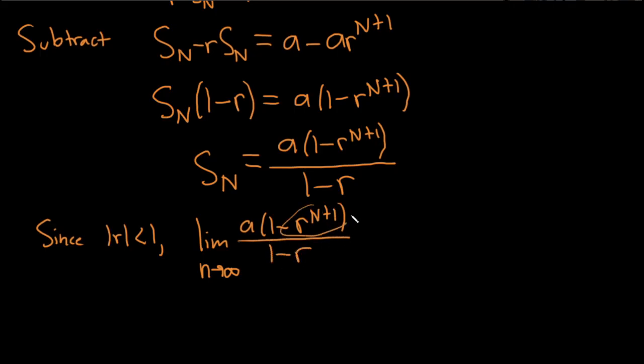Well, this piece is going to go to 0, right? This goes to 0. So now you drop the limit sign. So you get a times 1 minus 0 over 1 minus r. So this is just a over 1 minus r. And that would be the finish... the proof. That's the proof. We did it.